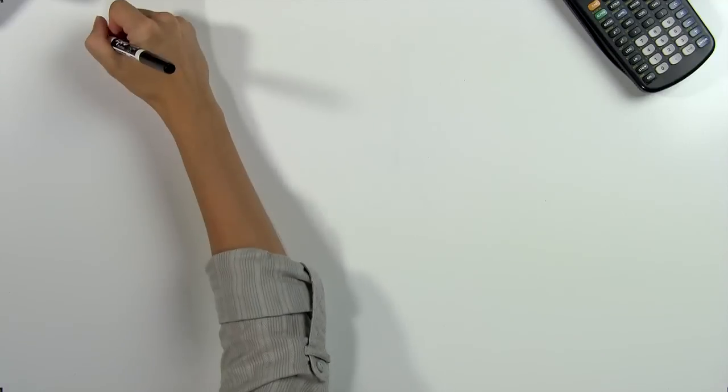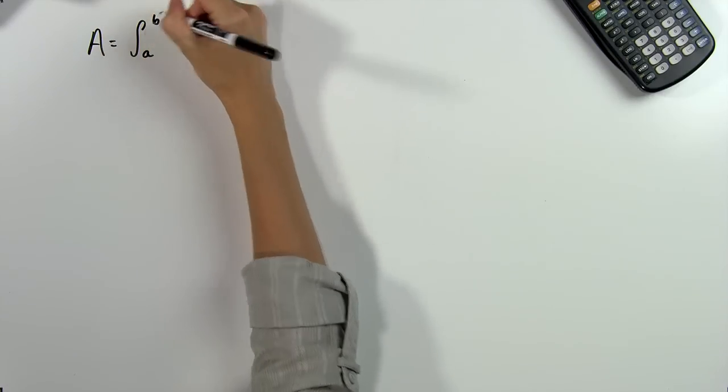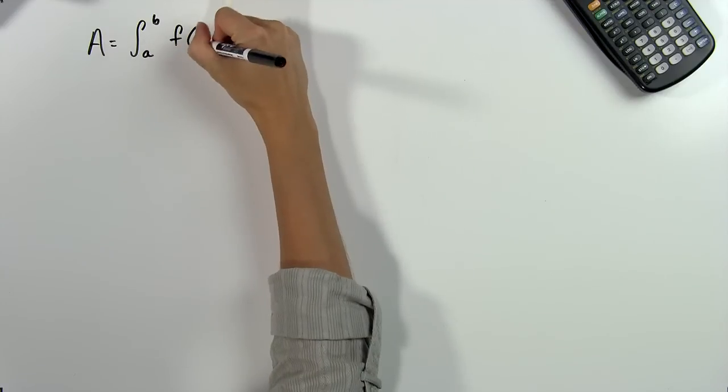To do this, we can use an integral that looks like this. The area is equal to the integral from a to b of the function f of x dx.